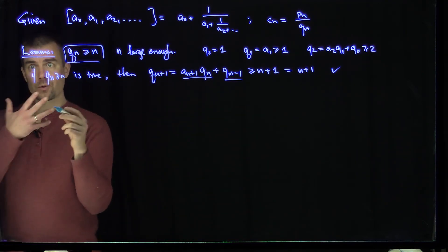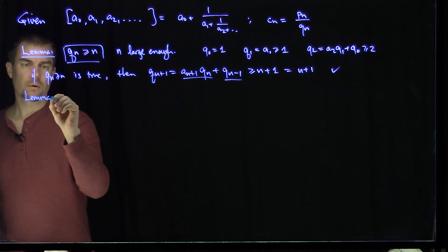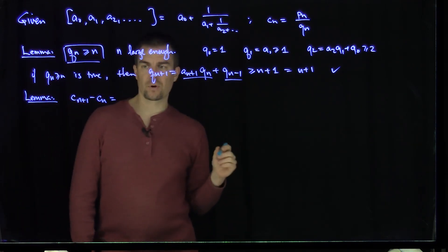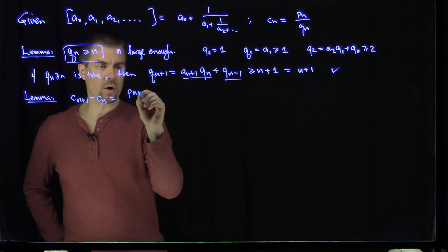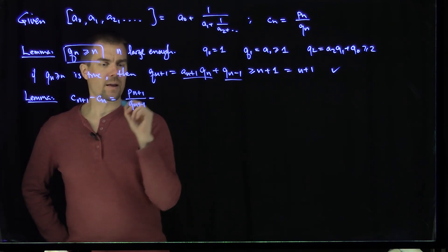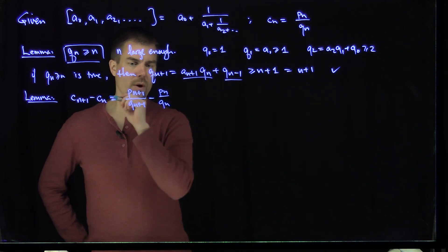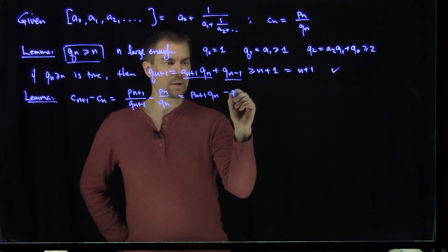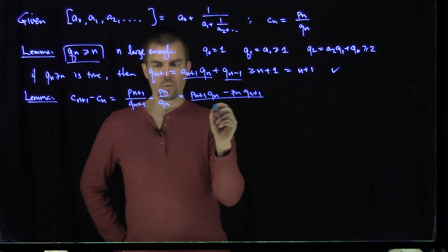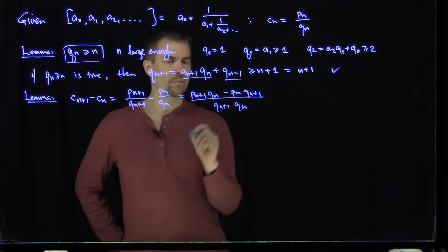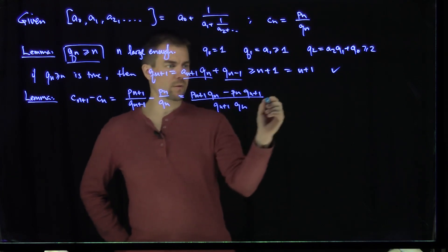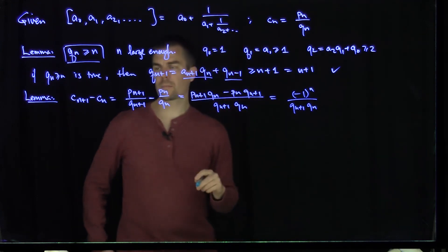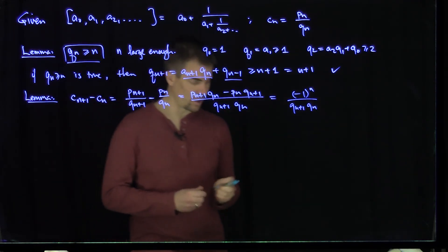The second lemma estimates the difference between two successive convergents. Looking at cn+1 minus cn, that equals pn+1 over qn+1 minus pn over qn, which gives pn+1·qn minus pn·qn+1 all over qn+1·qn. The numerator equals (-1)^n, so we have cn+1 minus cn equals (-1)^n over qn+1·qn. Now I'd like to show the sequence cn is Cauchy, and then we'll be done.